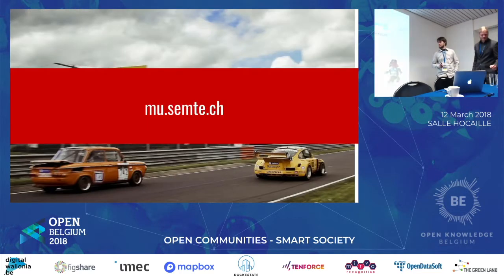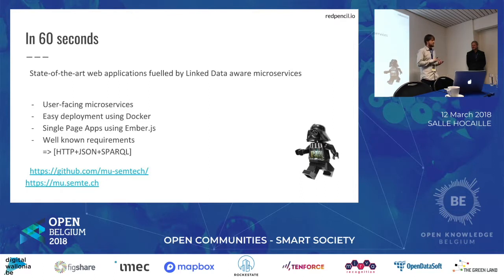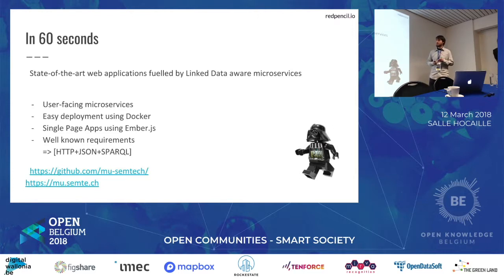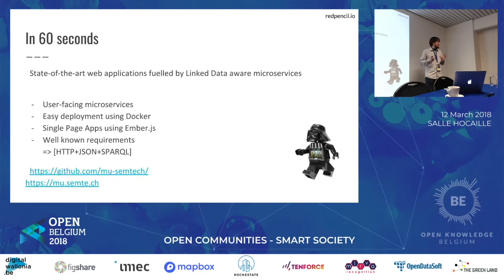So we built GUI-70, and I'm going to try to explain it in 60 seconds. What we went for is user-facing microservices, which means that one request from your front end is handled by exactly one microservice. That microservice talks to a triple database where data is shared. We use Docker to deploy our services and front ends, making it easy to download, build, and deploy. Everything's integrated in a single-page app, a JavaScript framework that talks to our back-end services. We build on standards: HTTP, JSON, SPARQL.